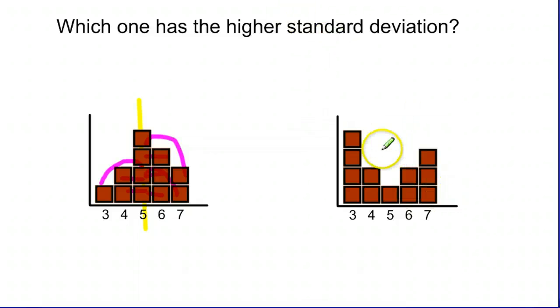Over here on the other side, on the right graph, the middle is somewhere around five again. But what you can see is that there's not very many close to the middle. This one's right on. There's a couple that are one away. And there's a whole bunch that are two away. One, two, three, four, five, six, seven. So the average distance from the middle on this graph is actually pretty high. A lot of them fall far away from the center.